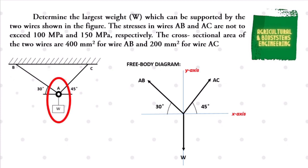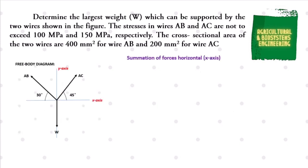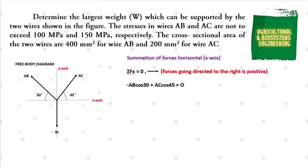After identifying our free body diagram, we can now have our summation of forces. We begin with the summation of forces horizontally, or forces with respect to the x-axis. We have summation of forces at x is equal to 0. Take note that force directed to the right is positive. We have: negative AB cosine 30 plus AC cosine 45 is equal to 0. Let us make this our equation 1.